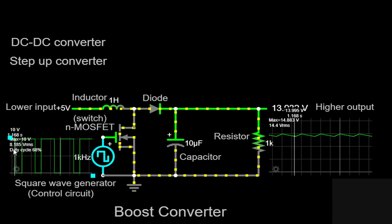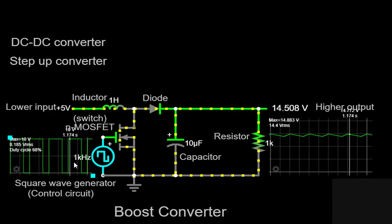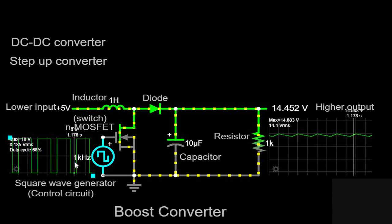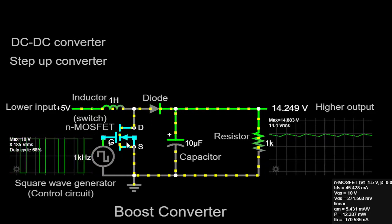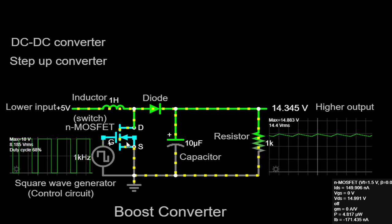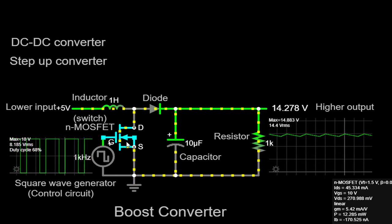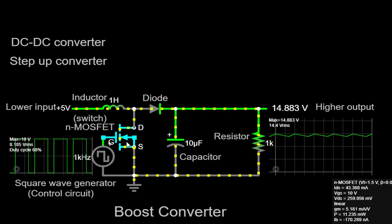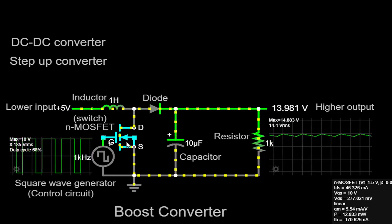When the square wave generator provides a high voltage, the MOSFET turns on, allowing current to flow through the inductor. As current flows through the inductor, energy is stored in its magnetic field. This energy storage process occurs over a specific period known as the on or charging phase.